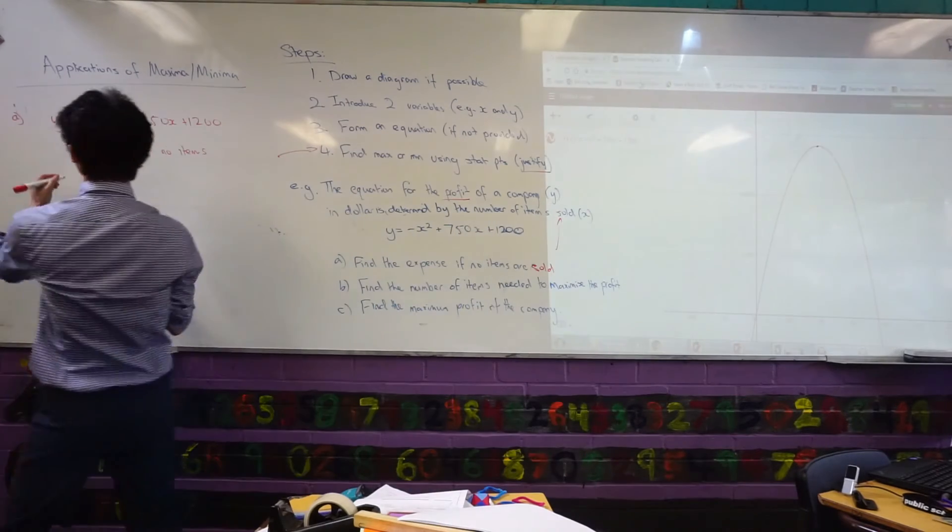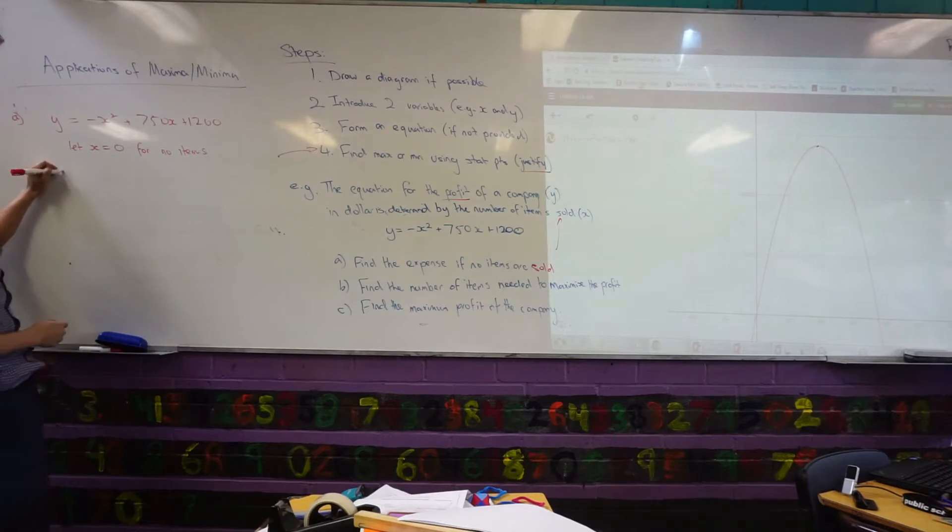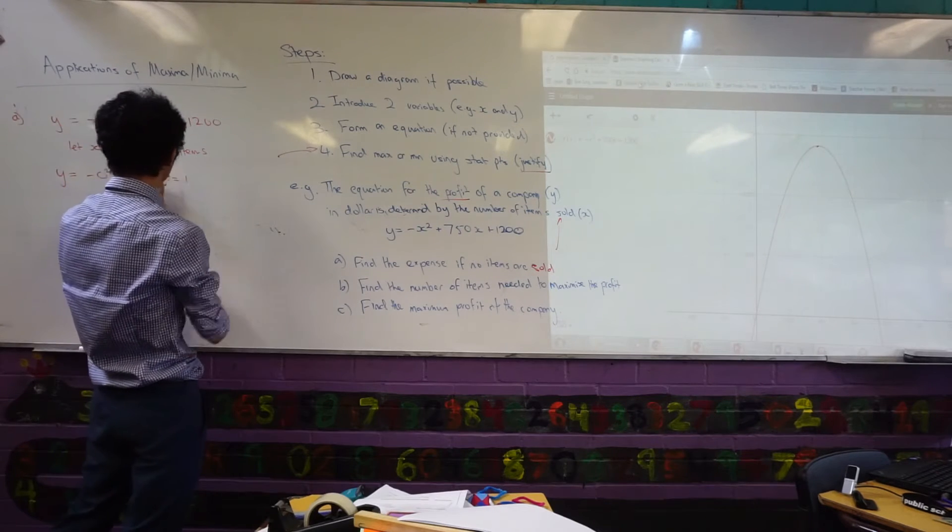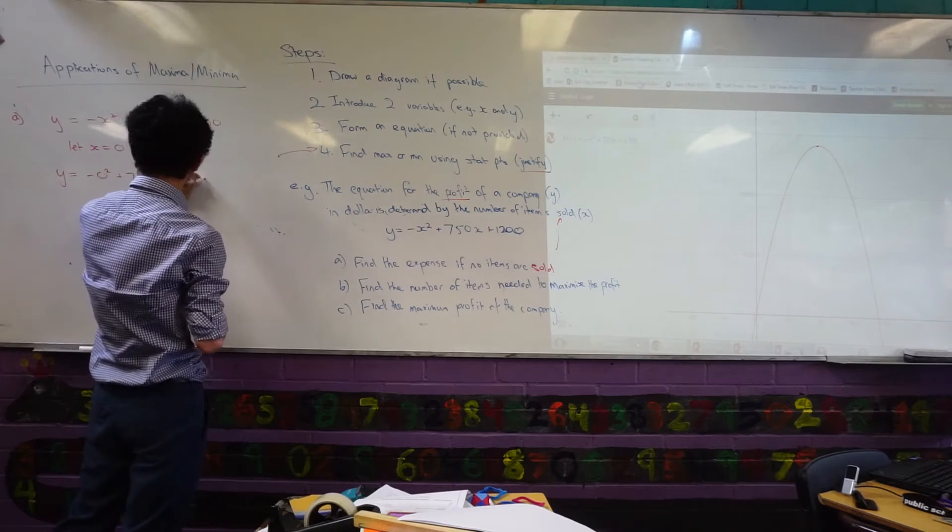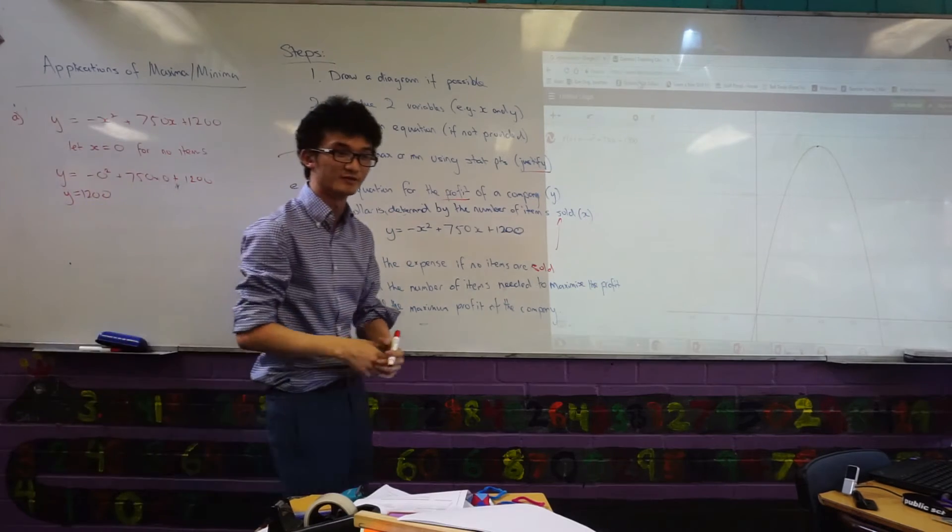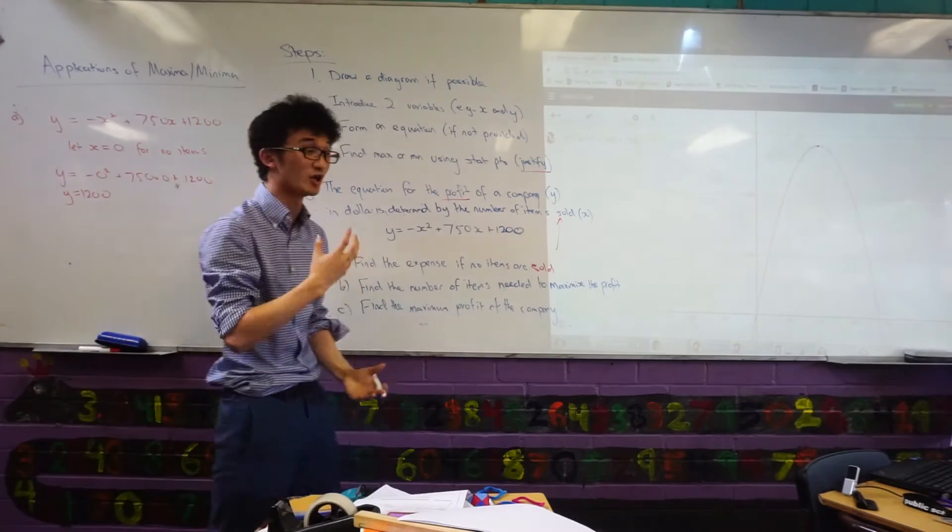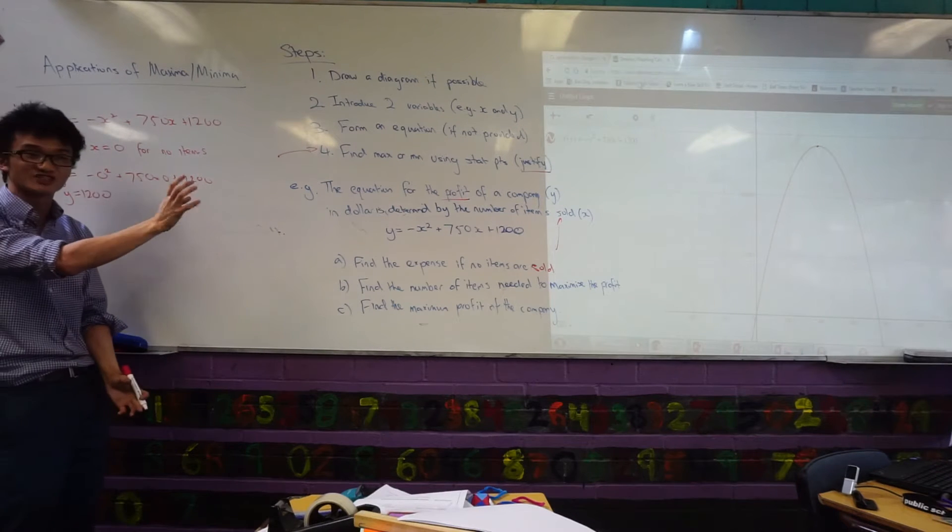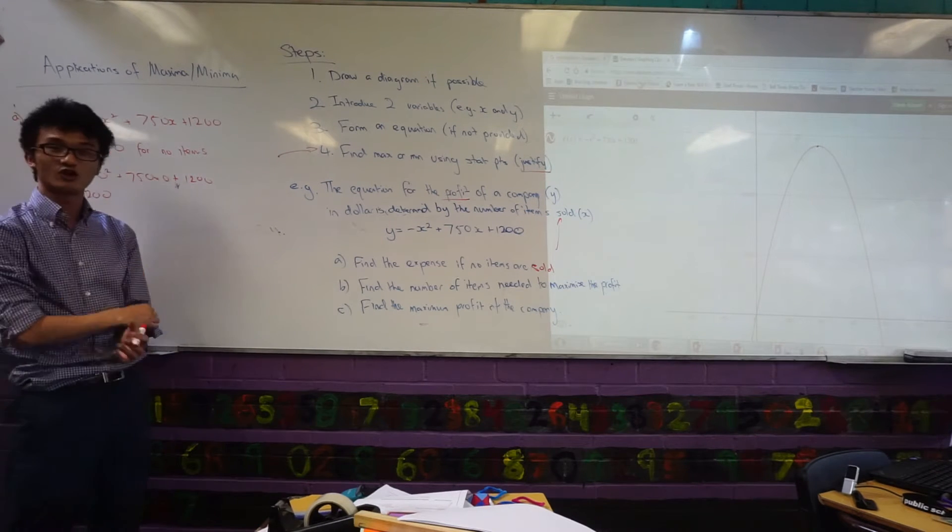Okay. And if I just substitute X equals to zero in here, what do I get? Zero squared. You just get 1,200. Now, why is that? Well, potentially, maybe there's like rent, or maybe you've got some machinery that you purchase. So, even if you don't manufacture any items, you've still got a cost involved.